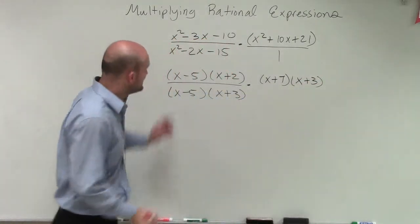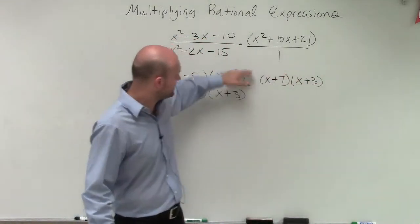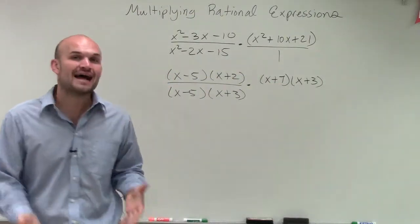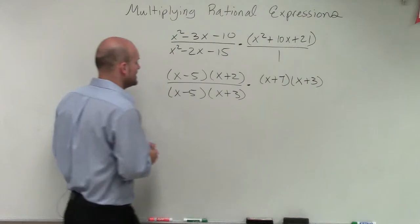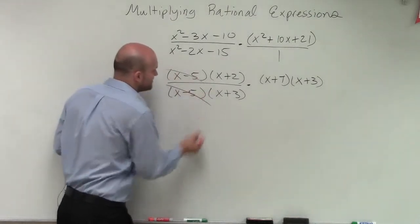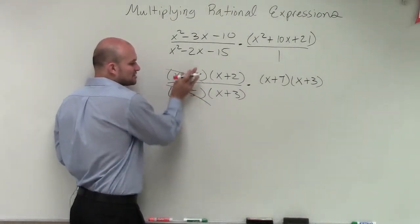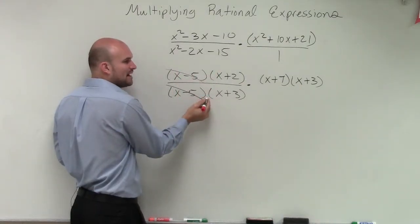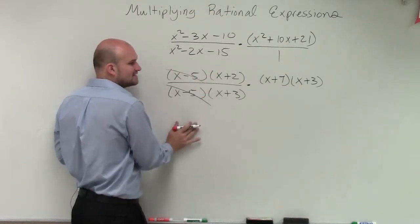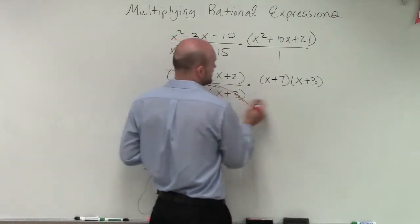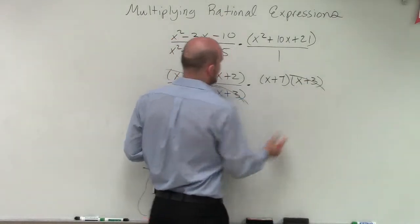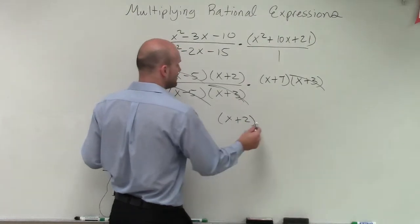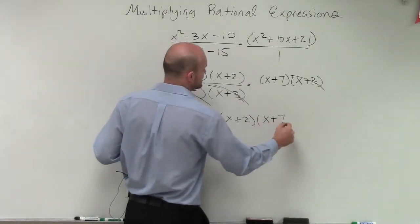Now you can see between each one of these binomials, and even across here, I have multiplication. Now I can divide out the terms across multiplication. So x minus 5 divided by x minus 5 — it's okay because the subtraction is inside the binomial, and each binomial is being multiplied by another binomial, so I can divide them out. x plus 3 divides out with x plus 3, leaving me with a final solution of x plus 2 times x plus 7.